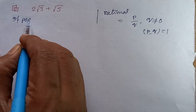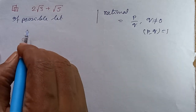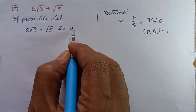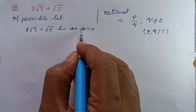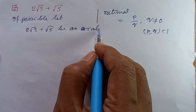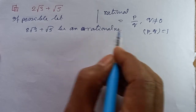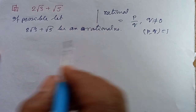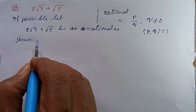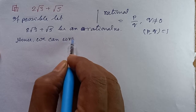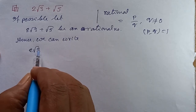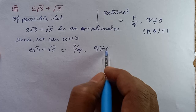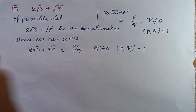If possible, let 2√3 plus √5 be a rational number. Let 2√3 plus √5 be equal to p by q, where q is not equal to 0 and p and q are prime to each other.